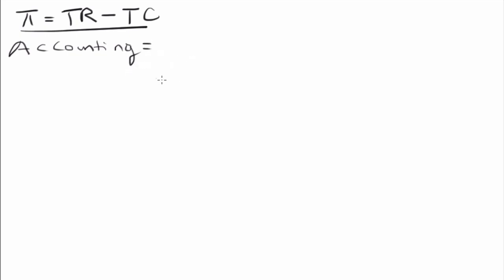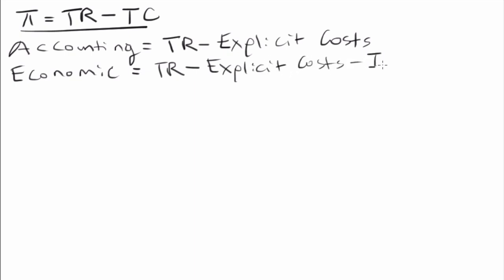The way that accountants typically think about profit is by taking into consideration total revenue and then subtracting explicit costs. This means that everything that you can actually see in terms of costs is what we will actually subtract in order to calculate our profit. However, an economist is much more in depth about the overall profit and how we calculate profit because economists take into consideration the opportunity costs that are associated with doing certain actions.